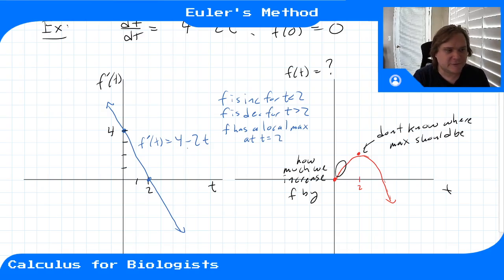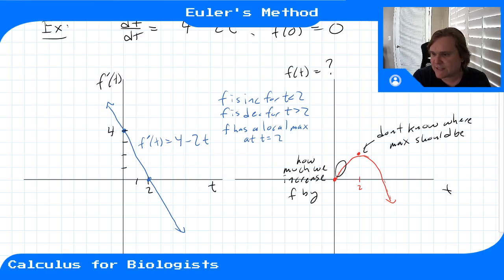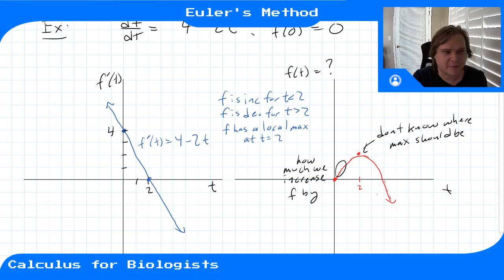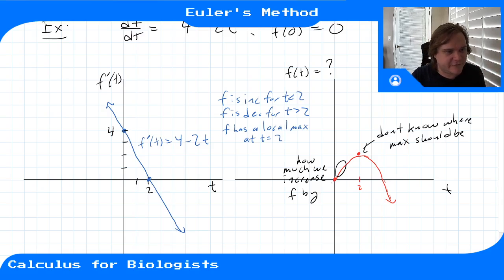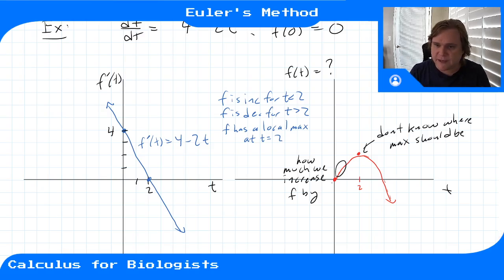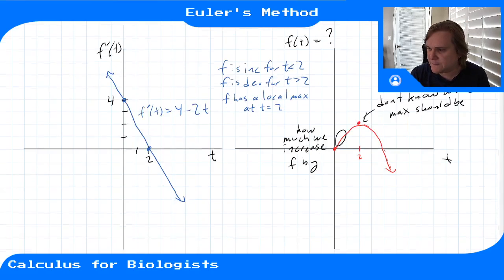We want to leverage the fact that we know the derivative so we can determine how much we should increase our function in each part. We step through: at t=0, the derivative is 4, so we follow that for a little bit, then check the derivative again, follow that for a little bit, check the derivative again, and so on. Euler's method is what this is going to be.